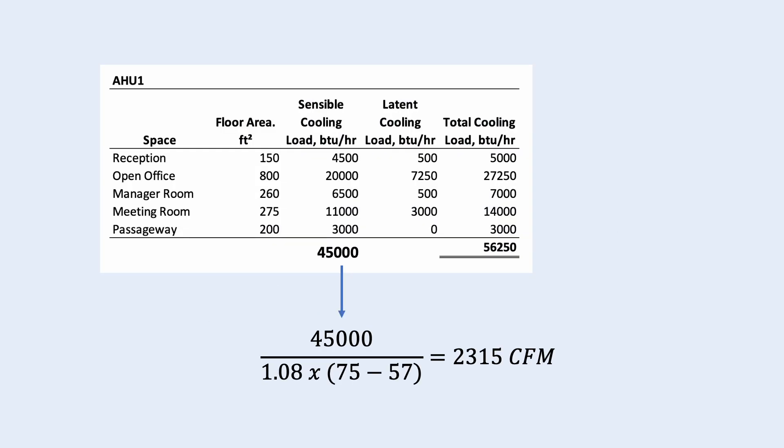Once we have our indoor design temperature and supply air temperature, we can total up our sensible cooling load and find out our airflow. In our case, it is 2315 CFM.